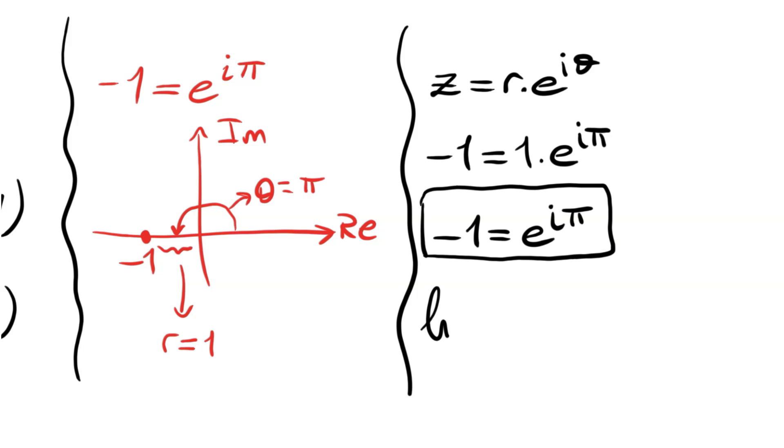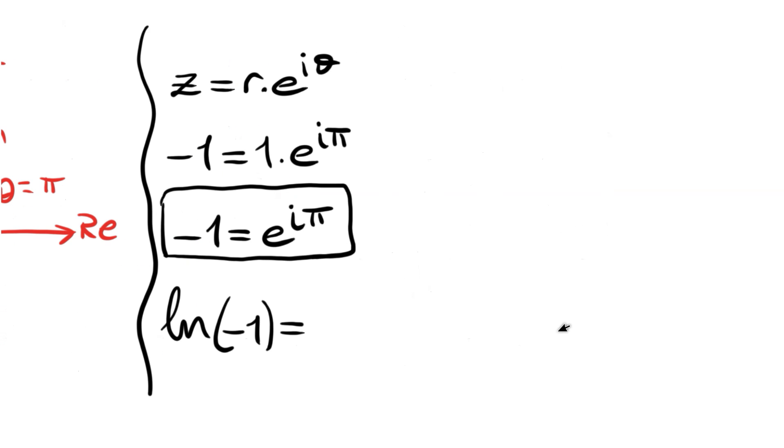Then ln(-1) becomes ln(e^(iπ)). We have e^(iπ), then this becomes i times π since ln(e) is just 1. Let's finish our question.